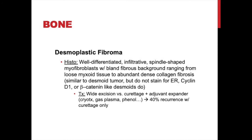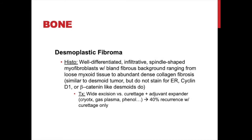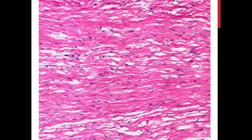On histology you'll see well-differentiated and infiltrative spindle-shaped myofibroblasts with bland fibrous background ranging from loose myxoid tissue to abundant dense collagen fibrosis. These look similar to desmoid tumors, but unlike desmoid tumors, they do not stain for estrogen receptor, cyclin D1, or beta-catenin. Treatment is wide excision for destructive lesions like the distal femur case — requiring distal femur replacement. More focal lesions can be managed with curettage plus an adjuvant extender like cryotherapy, gas plasma, or phenol, though there is about a 40% recurrence rate with curettage alone.